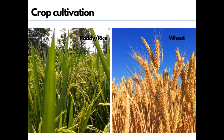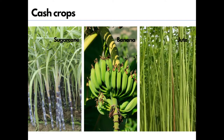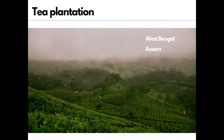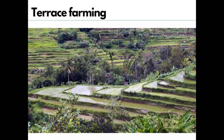Agriculture is the main occupation of the people. They cultivate crops like paddy as rainfall is high. They also grow wheat, maize, sorghum, gram, and millet varieties. Cash crops like sugarcane and jute are also grown. Banana cultivation is done in plain regions, and tea is harvested on plantations in West Bengal and Assam. Silkworm is cultivated in parts of Bihar and Assam. In mountains and hills where slopes are gentle, crops are grown on terraces — flat lands built on steep slopes to slow down water flow.